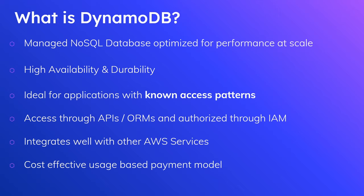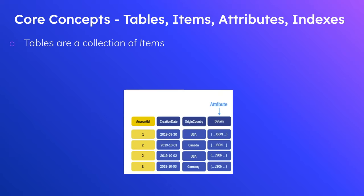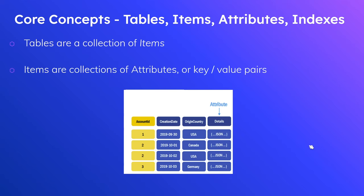Now let me cover a few key concepts: tables, items, attributes, and indexes. Tables are a collection of items — I think of a DynamoDB table the same way as a table in SQL. Looking at a simple DynamoDB table example, the items are the records — every row is an item. Within items are collections of attributes or key-value pairs, which are essentially the columns. So the key 'creation date' and the value '2019-09-30' is an attribute for the item with account ID one.